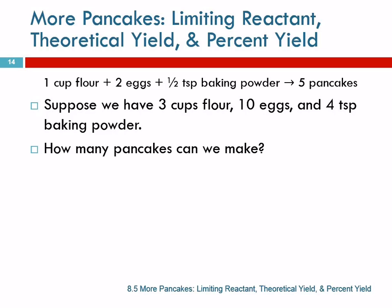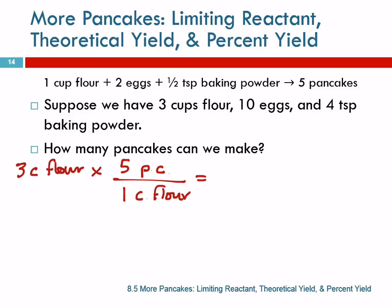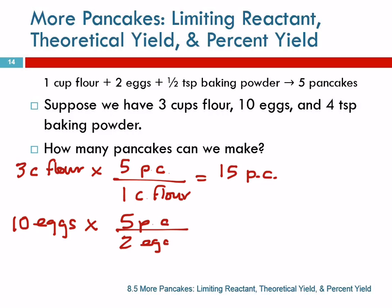So let's look at how we would write that out. 3 cups of flour, times 5 pancakes — I'm going to call those PCs — for 1 cup of flour. You were doing that in your head: 5 pancakes, 15 pancakes. 10 eggs, 5 pancakes for every 2 eggs. So that ends up being 25 pancakes.